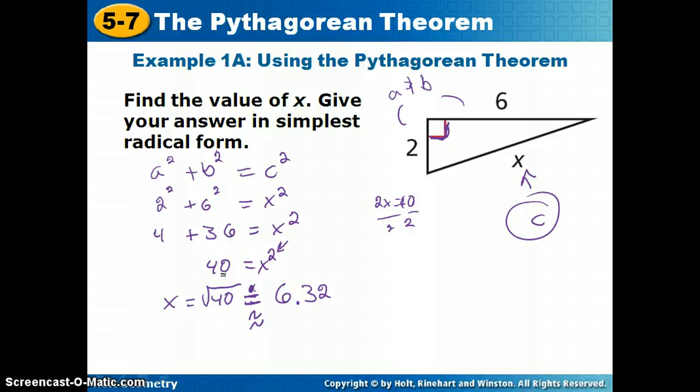Which I can always check too. I can go back and say, does it work out that 2 squared plus 6 squared equals 6.32 squared? And again, I get 4 and 36. This is 40. 40 equals 40. Checks.